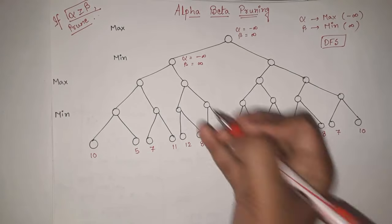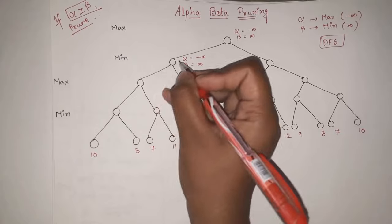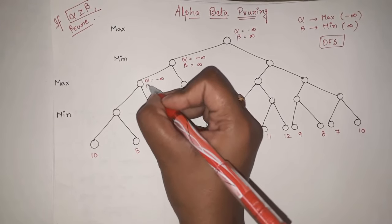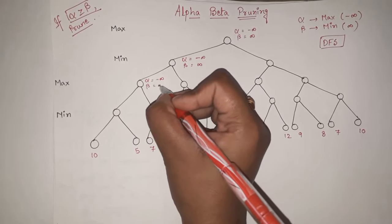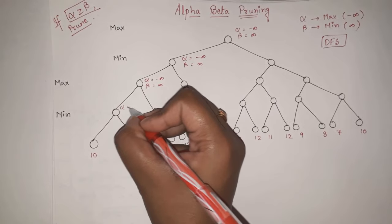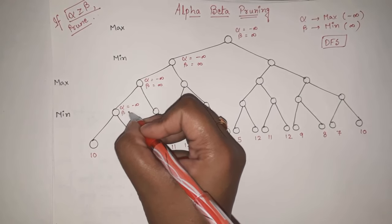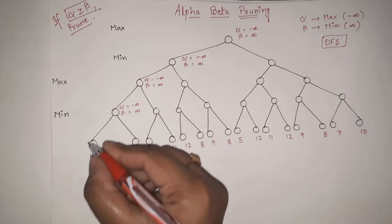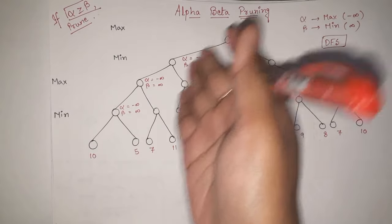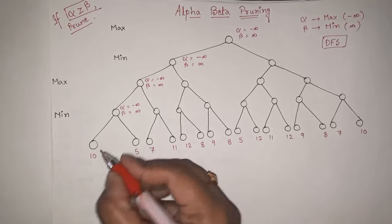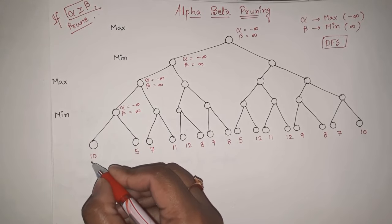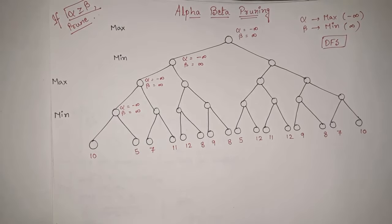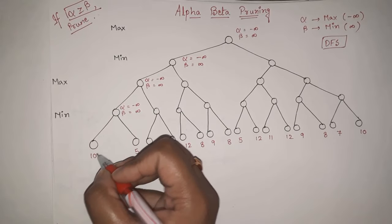Similarly, values will be transferred to each child. So here also alpha equals minus infinity and beta equals infinity. Here also alpha equals minus infinity and beta equals infinity. Now we are coming here — going depth-wise. After this, we are coming here, where the value of this node is given as 10. These leaf values are already given.